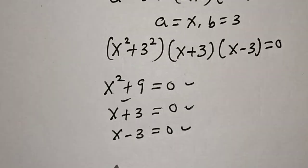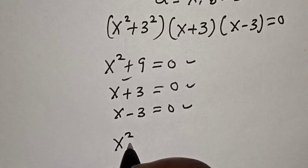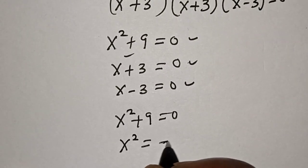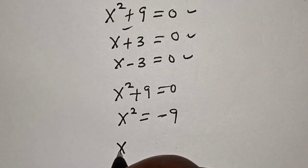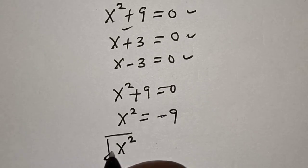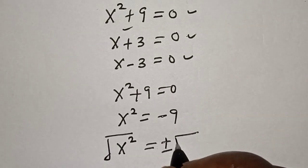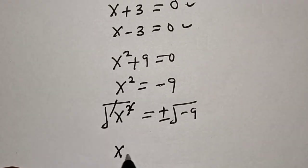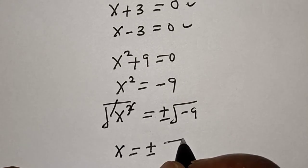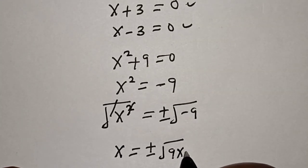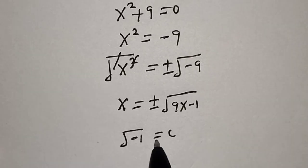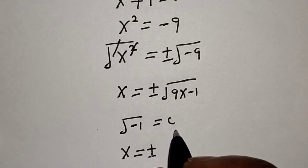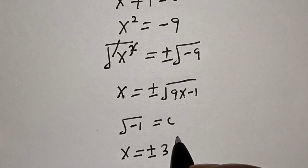From the first case, we have x squared plus 9 is equal to 0, so x squared is equal to minus 9. Taking the square root of both sides, x is equal to plus or minus the square root of minus 9, which is plus or minus the square root of 9 times minus 1. Since the square root of minus 1 is equal to i, then x is equal to plus or minus 3i.